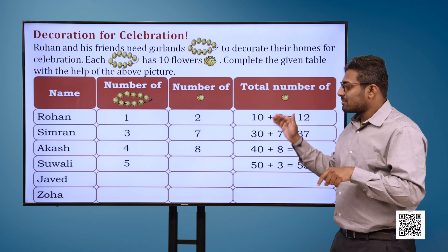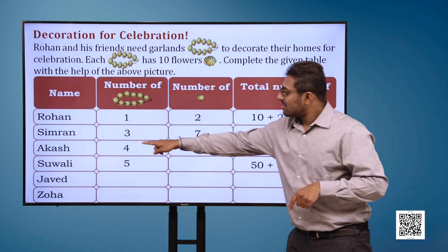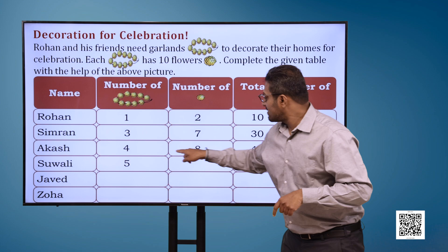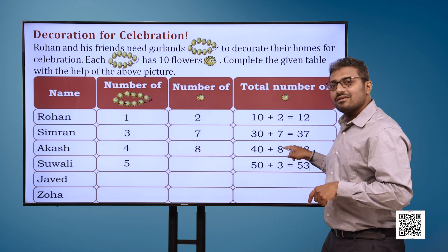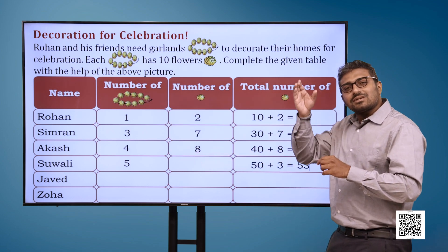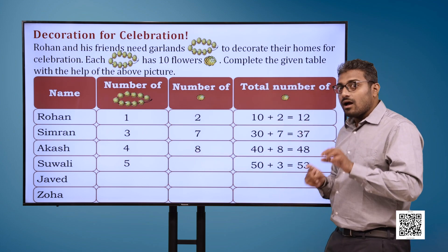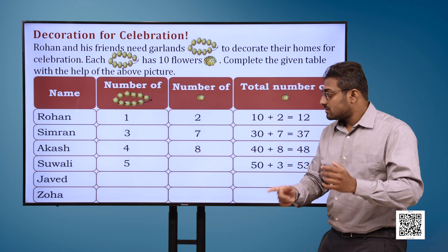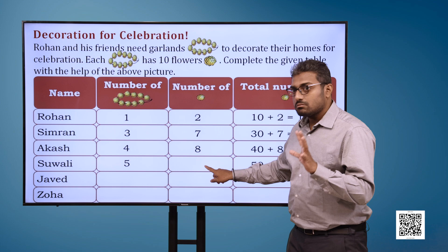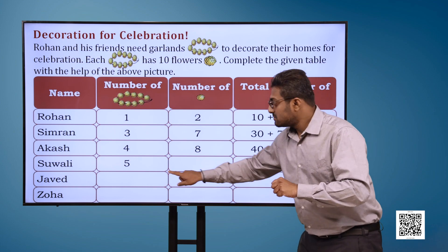Name: Akash. Number of garlands: 4, number of flowers: 8. Total number of flowers: 40 plus 8 is equal to 48.